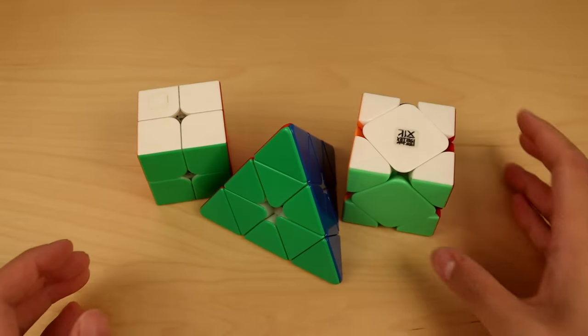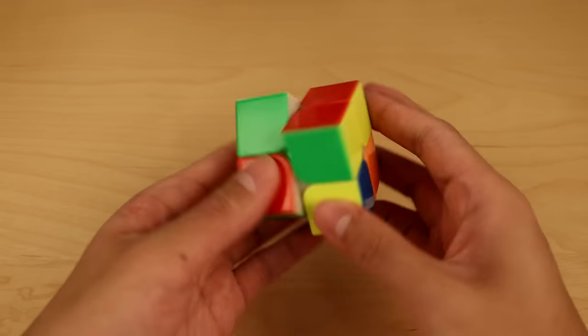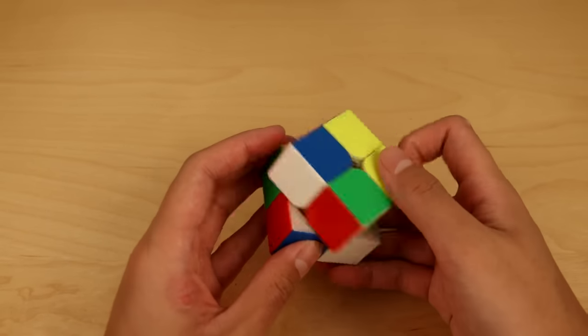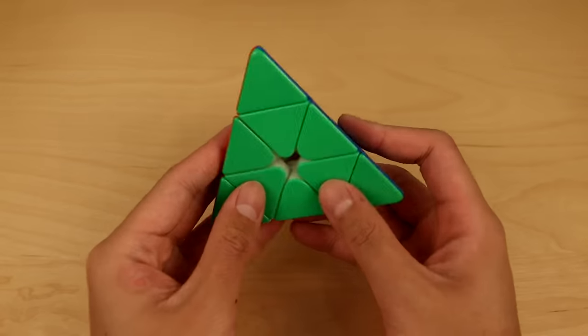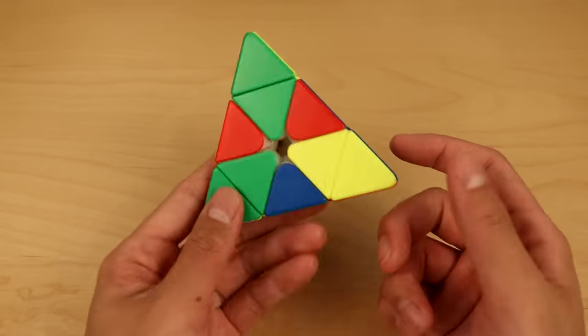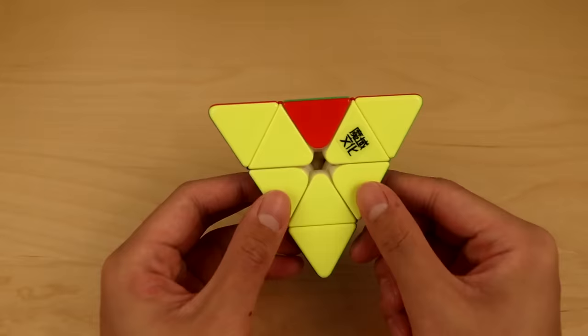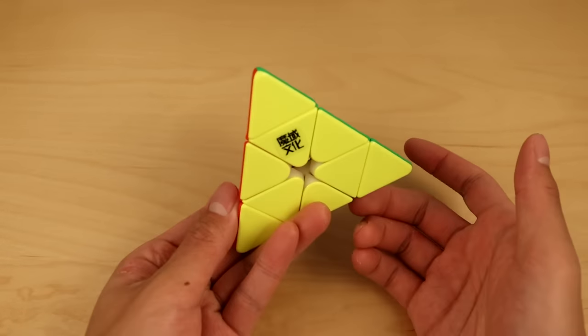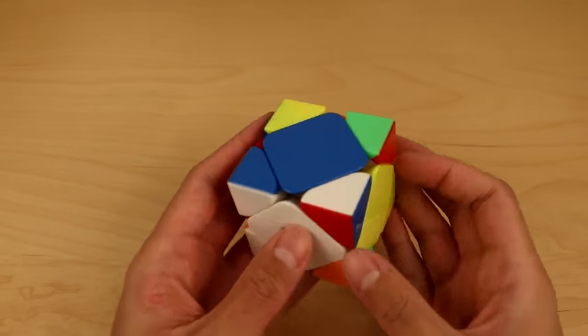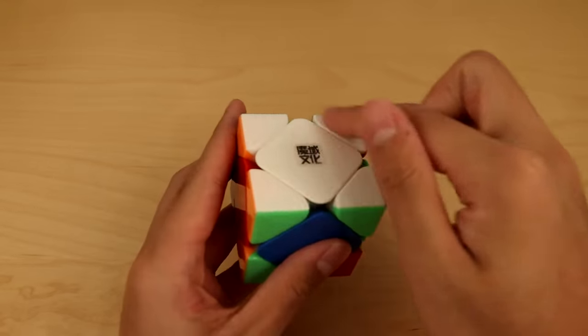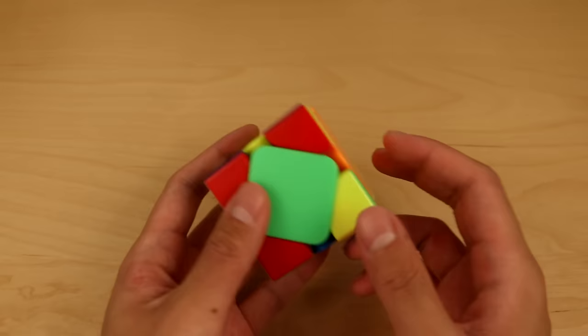First off are 2x2, Pyraminx, and Skewb. 2x2 is solved pretty simply: first you solve some side or some layer, and then you solve the rest of it in one algorithm. Pyraminx is solved similarly - you make one V, then solve the rest in one algorithm as well. For Skewb it's very similar: first solve one layer, and after solving that you solve the rest in one algorithm as well.